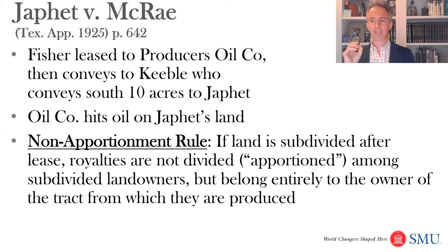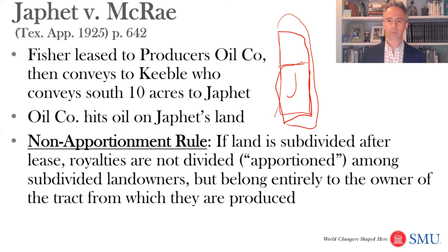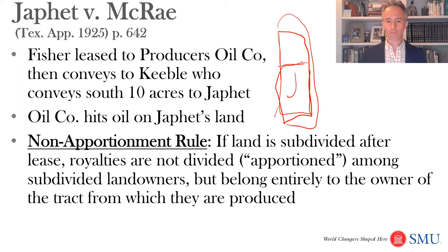The court says if the land is subdivided after the lease, as it was here — just the bottom 10 acres are sold to Jaffet — and there is production just on the bottom 10 acres, the question is: should that be shared with everybody, or does it all go to Jaffet as holding those south 10 acres? The non-apportionment rule says it is not divided or apportioned. It belongs entirely to the owner of the tract from which it's produced.